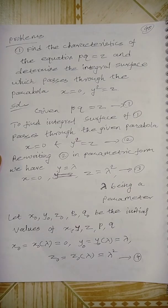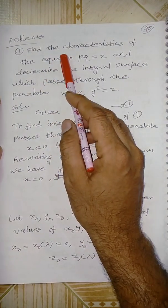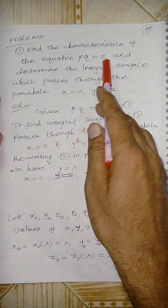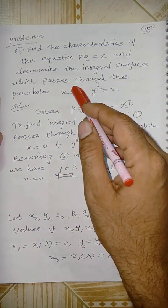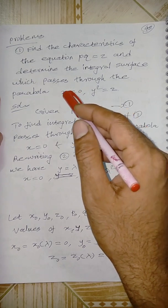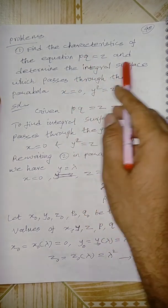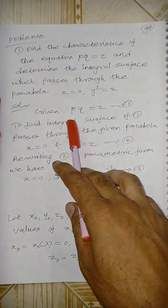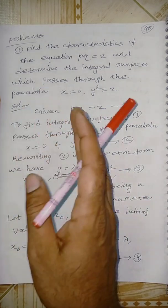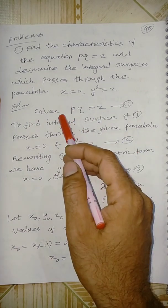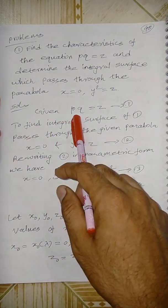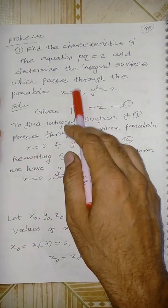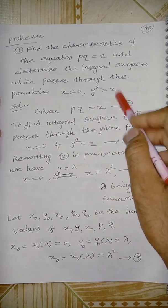First problem: find the characteristic of the equation pq = z and determine the integral surface which passes through the parabola. Given pq = z, we set x = 0 as a fixed parameter. If y = lambda, z = lambda squared — these are the parametric initial conditions.